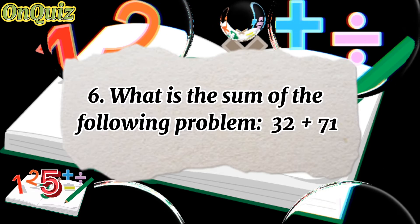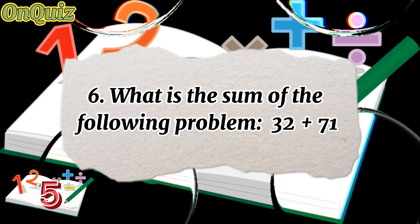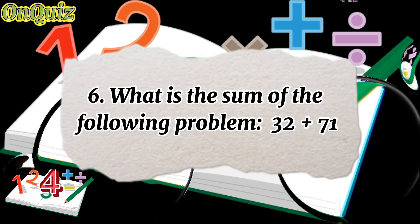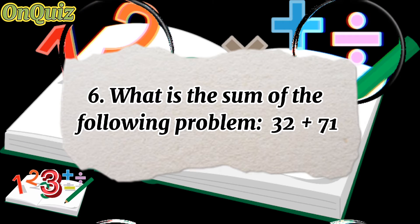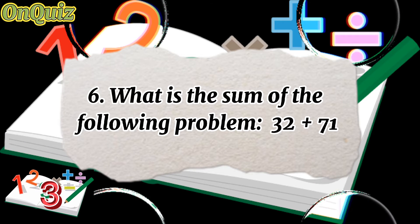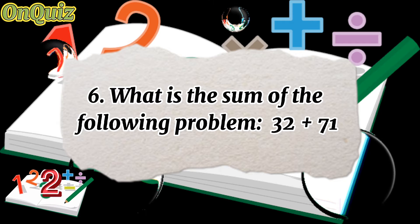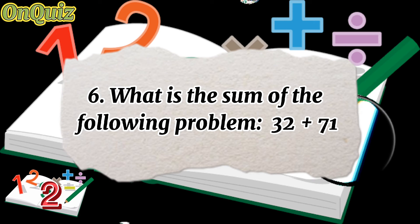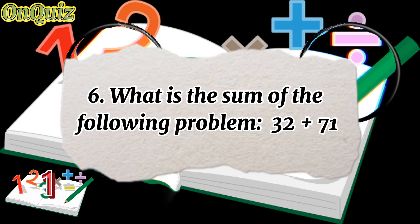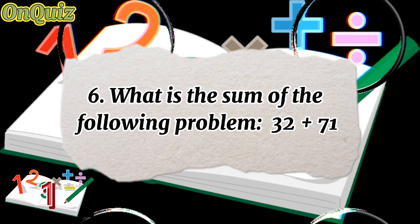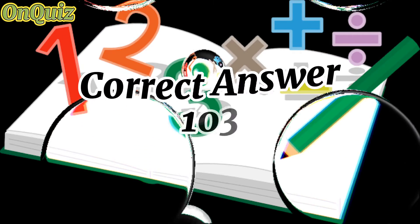Question 6. What is the sum of the following problem? 32 plus 71. Correct answer: 103.